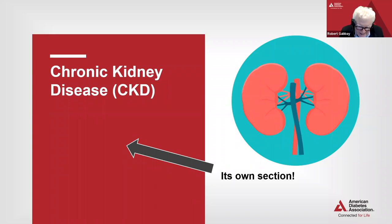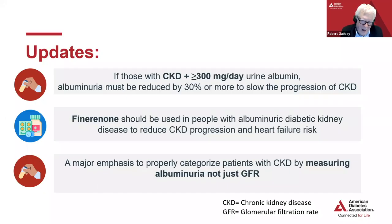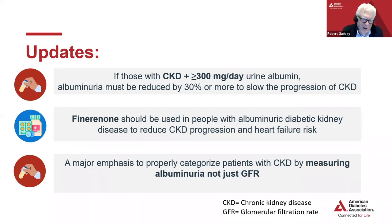Now moving to chronic kidney disease — this is a new section. We used to lump together all microvascular complications in one section, but chronic kidney disease, based on the evolving science, deserves its own separate section. For people that have chronic kidney disease and significant urinary albumin greater than 300 milligrams per day, albuminuria should be a target in and of itself to be reduced by 30% or more to prevent progression. There's information about finerenone to be used in people with albuminuric diabetic kidney disease to prevent progression, and a major emphasis to categorize patients with chronic kidney disease not only by their GFR, but also by measuring albuminuria.